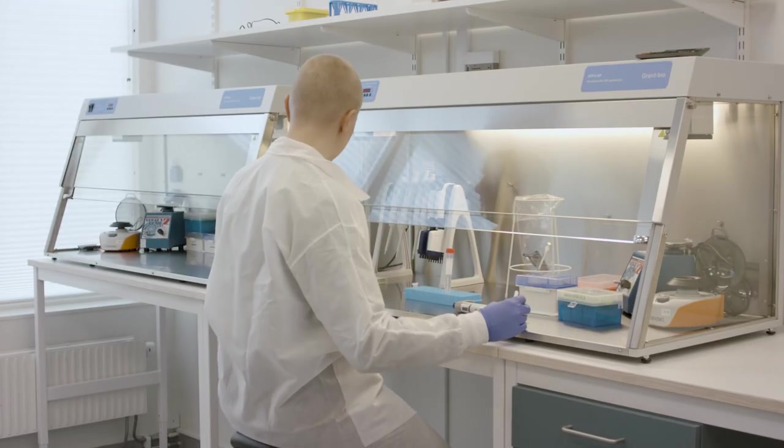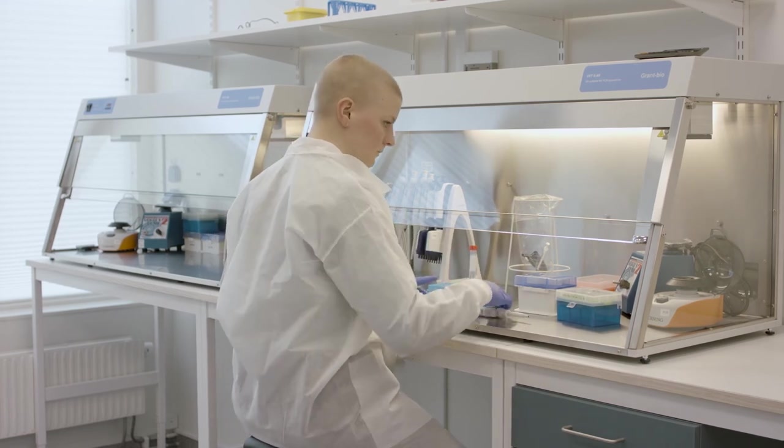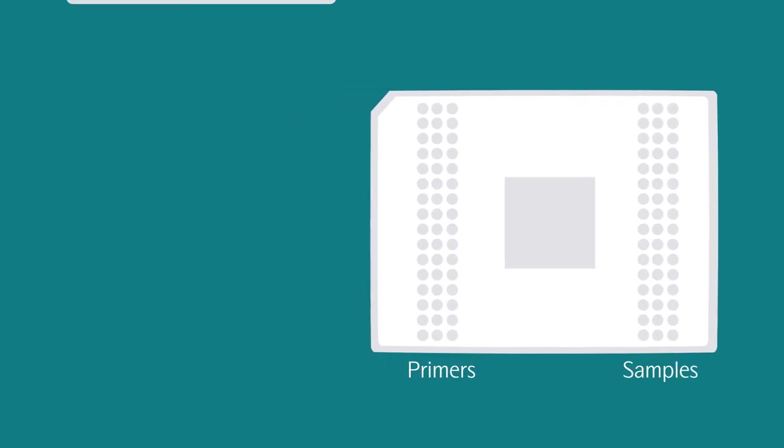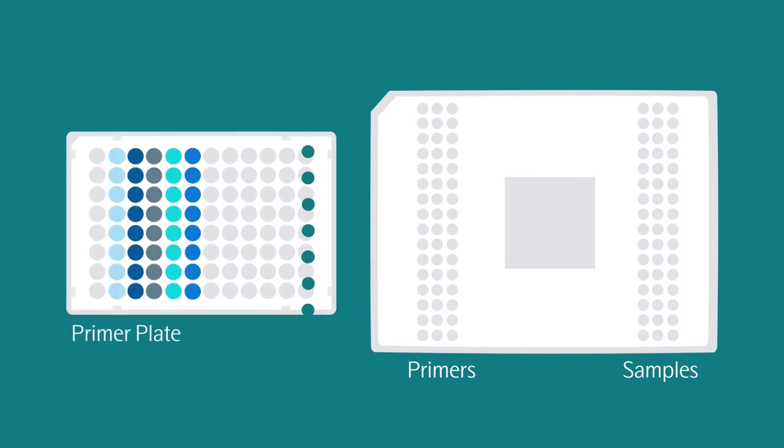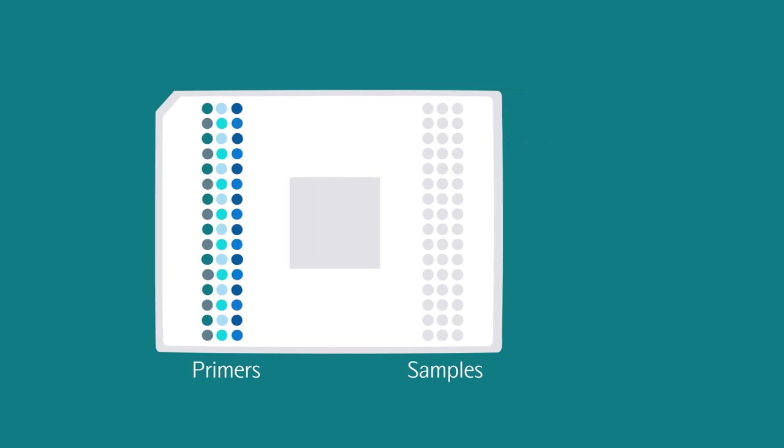The next step involves loading the primers and samples onto the target 48 IFC. Using reverse pipetting, pipet 5 microliters of each primer into the respective primer inlets on the IFC on the left-hand side.